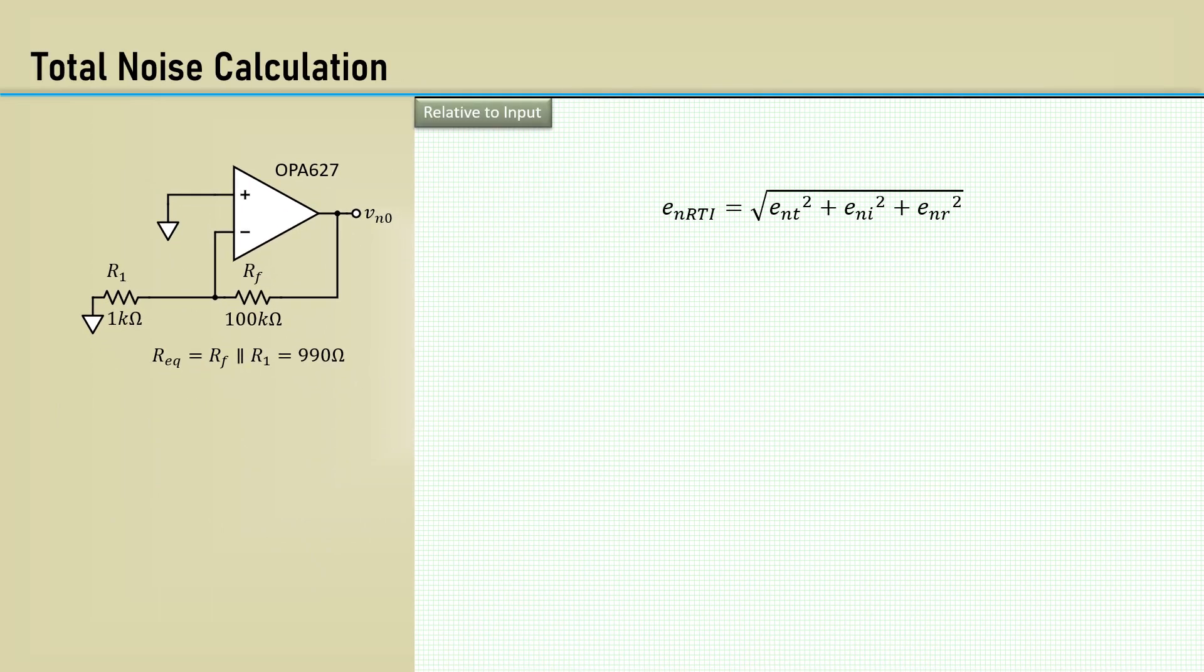Let's wrap this up by calculating the root sum squares of the device total noise voltage, the noise voltage due to the input bias current noise, and the resistor noise. This results in 3.22 microvolts RMS. This is all relative to the input.